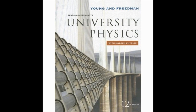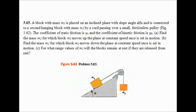A block with mass M1 is placed on an inclined plane with slope angle alpha and is connected to a second hanging block with mass M2 by a cord passing over a small frictionless pulley. The coefficient of static friction is mu sub s and the coefficient of kinetic friction is mu sub k.